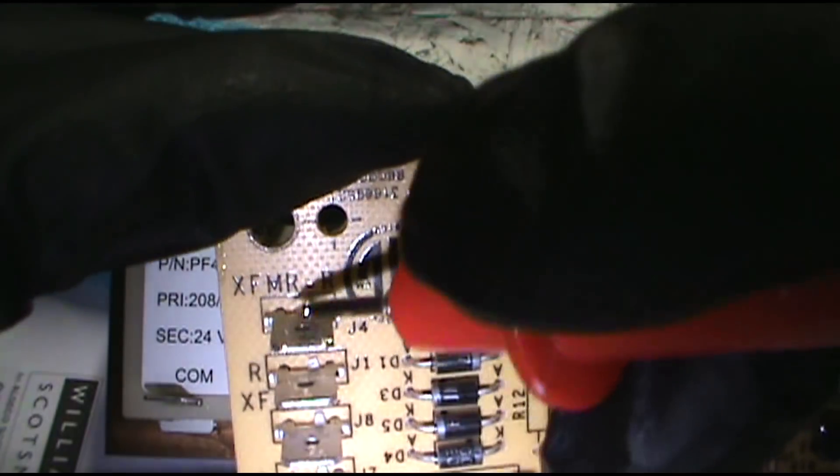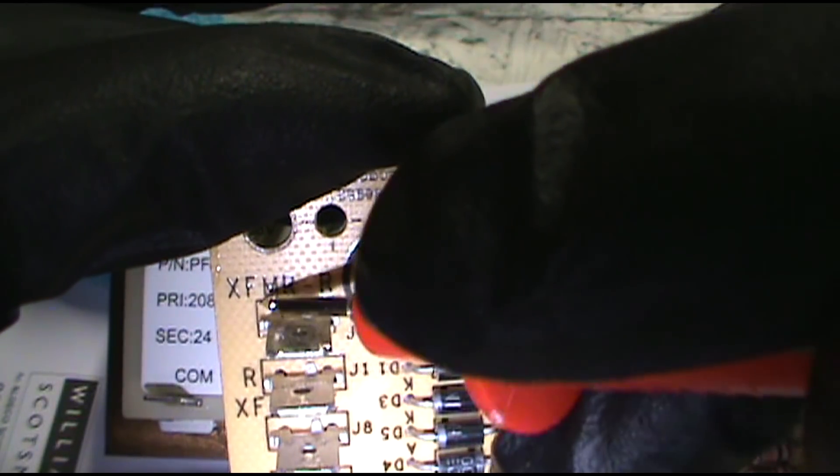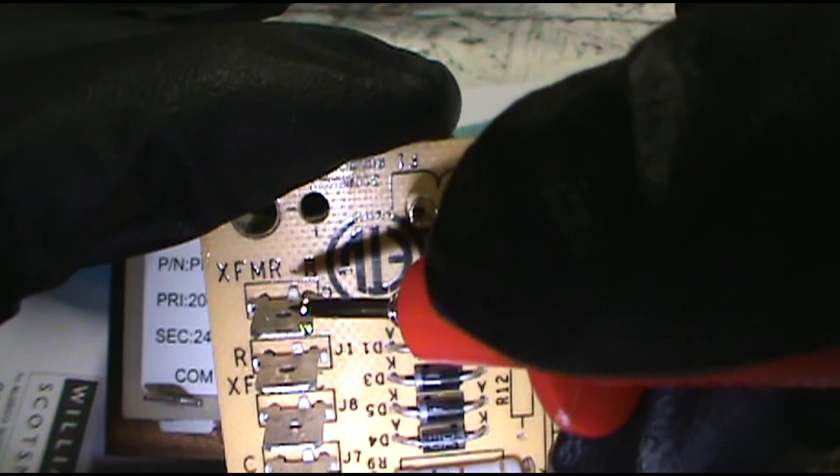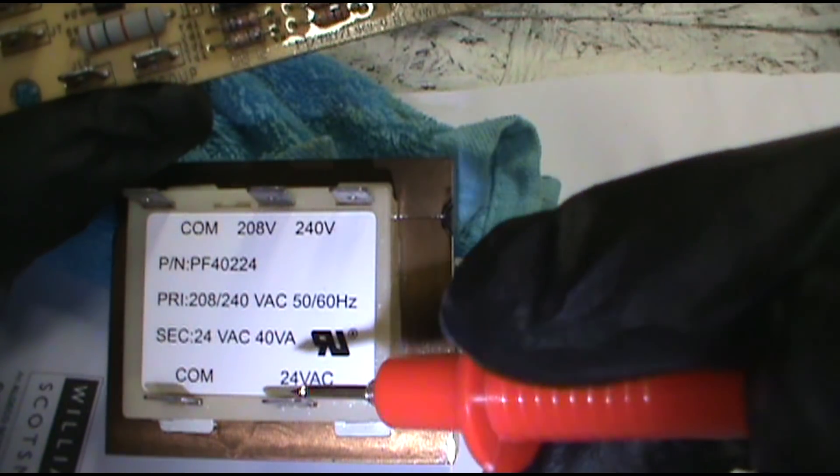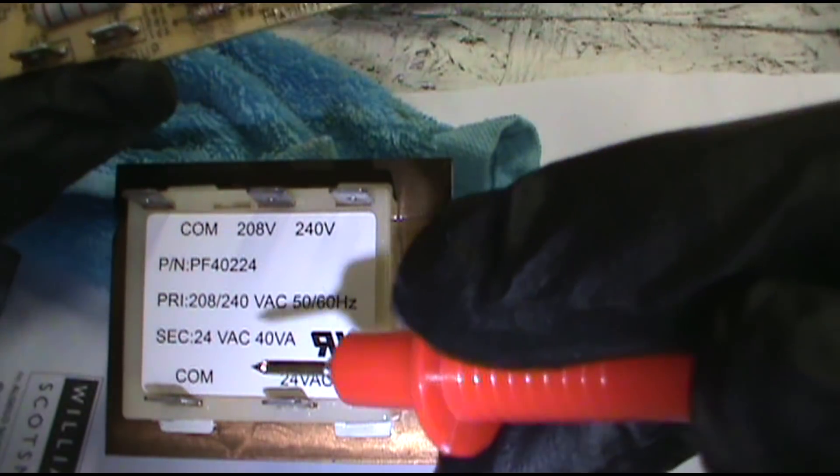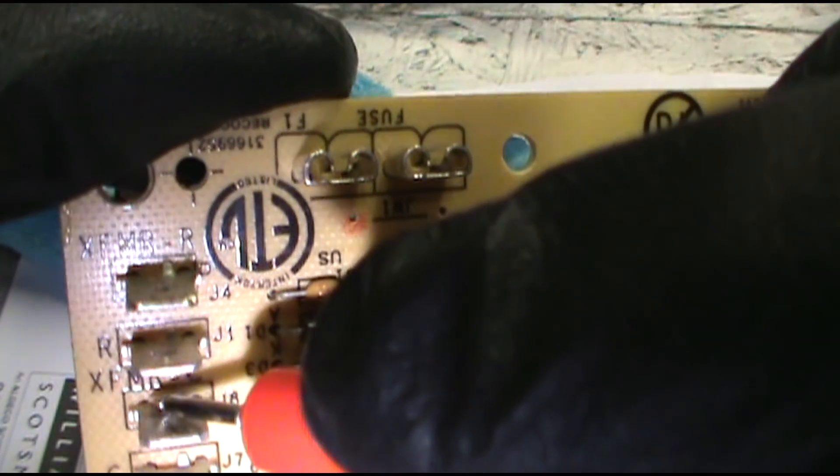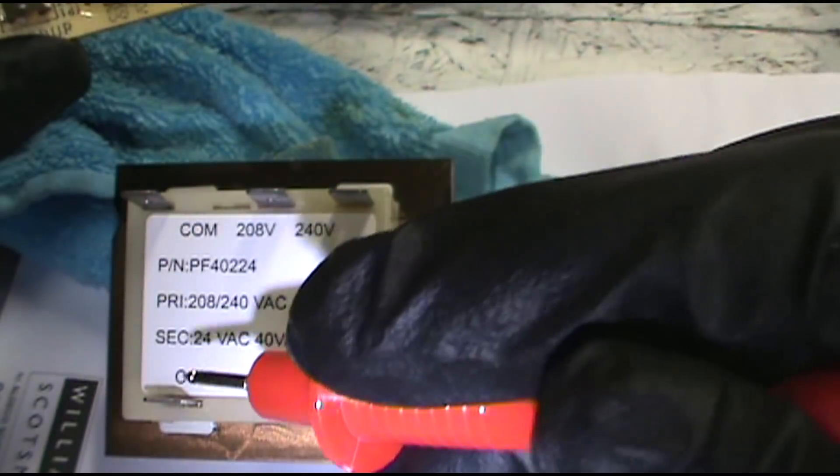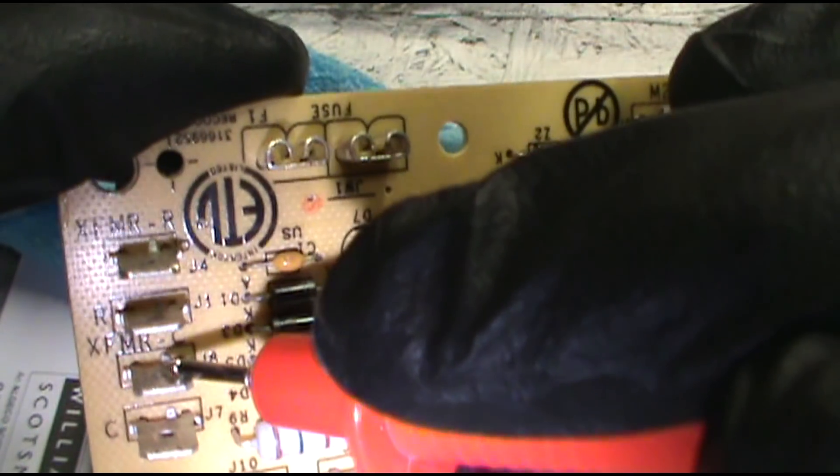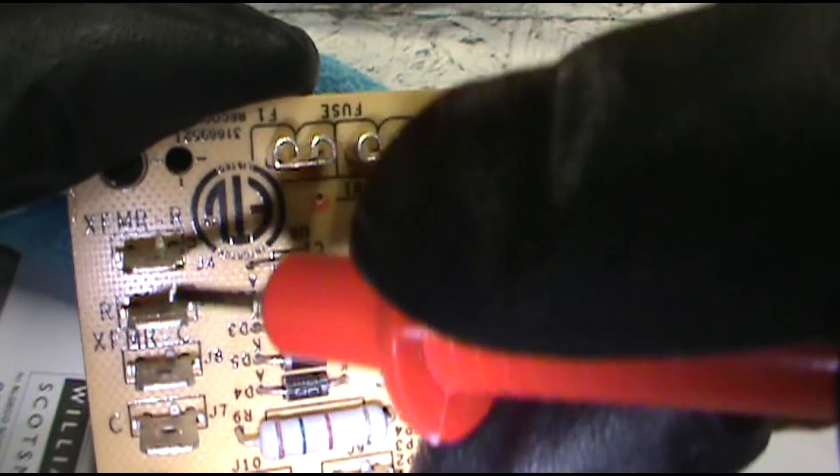So the XFMR stands for transformer, and this will be the 24 volts coming into the board from the transformer. So it comes out here, comes out of this terminal and into here. And the XFMR C, C stands for common. This comes out of the common on the transformer, comes out and into here. So these two are the power coming in, the 24 volts coming into the board.